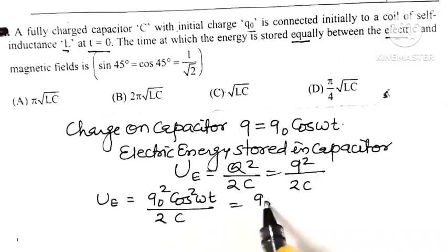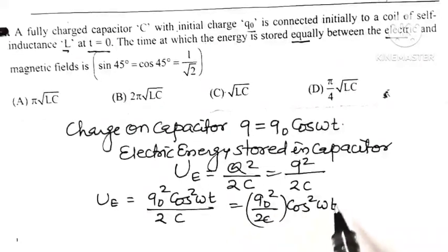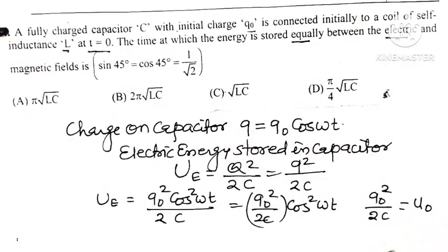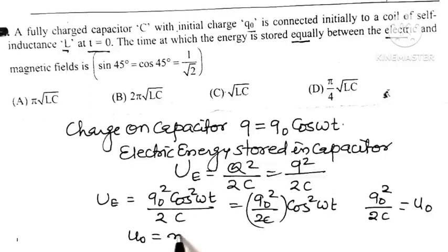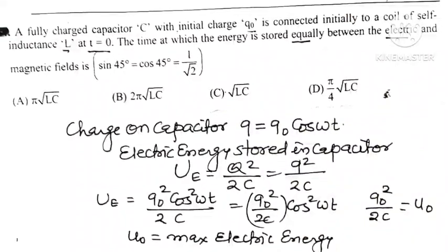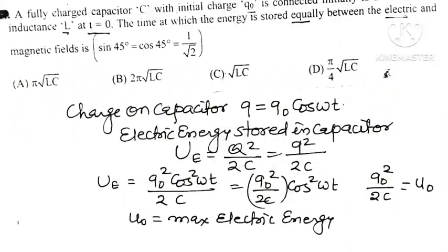We can write this as Q0 squared divided by 2C, multiplied by cos squared(omega t). Let Q0 squared divided by 2C be equal to U0. This U0 represents the maximum electric energy stored in the capacitor.